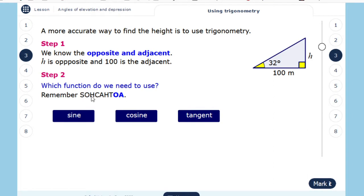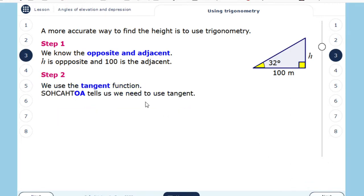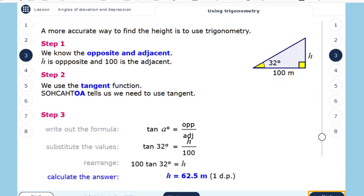Remember, so basically I have to use tangent. We will use tangent. So tangent of angle A, which is 32, opposite over adjacent. So I can find my height, which is 62.5 meters.